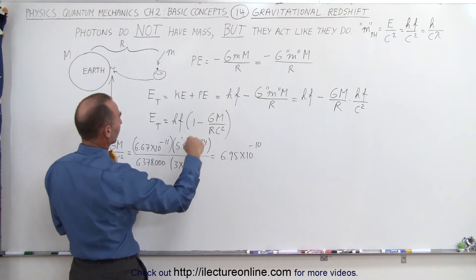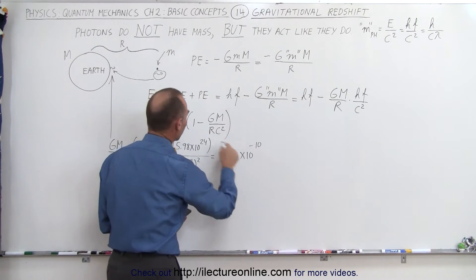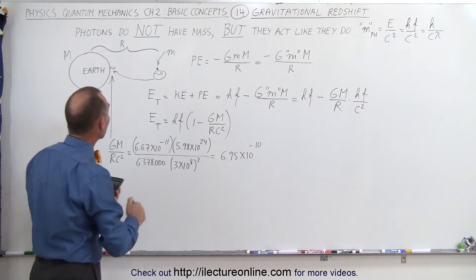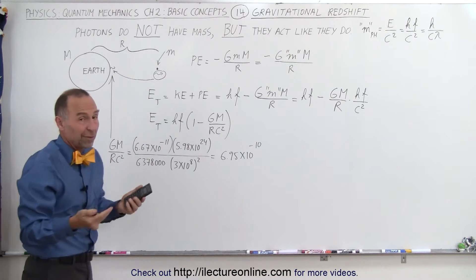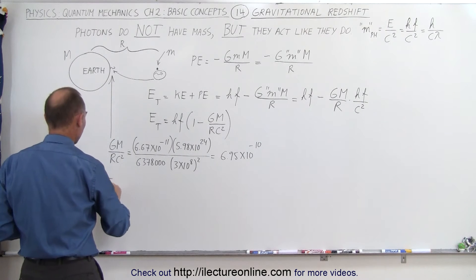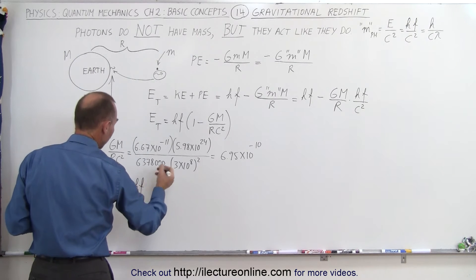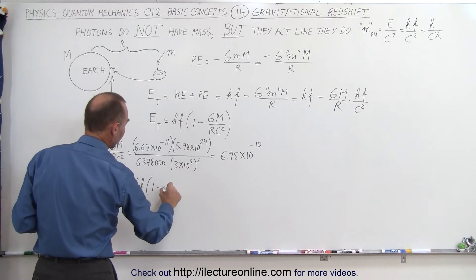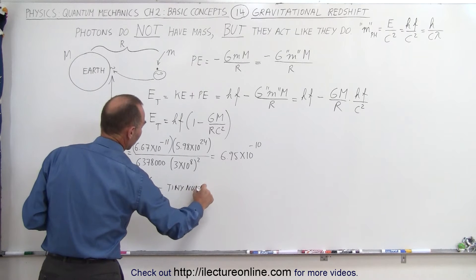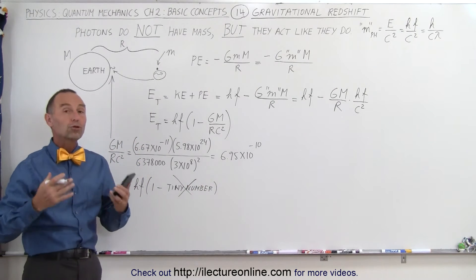Compare that to the number one — it's one minus this quantity — and notice it is a very, very small number relative to one. So it's extremely insignificant for the gravitational fields of planets, and that's why we never really notice or measure it. The total energy of a photon on the surface of the earth is approximately equal to hf times (1 minus a very tiny number), which we can simply ignore. It's essentially just h times f — what we normally observe.